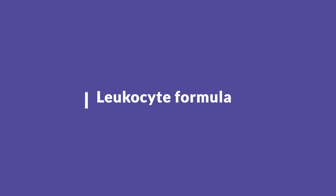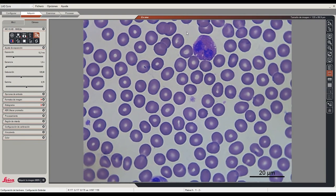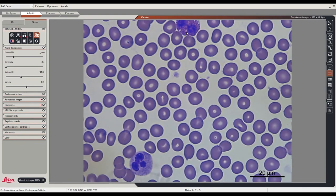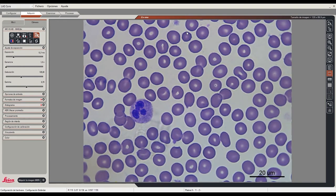To obtain the leukocyte formula, 100 leukocytes are counted under the microscope, specifying the number of each type of leukocyte found and expressing this value as a percentage of 100. This gives the percentage of each type of leukocyte in the sample analyzed.